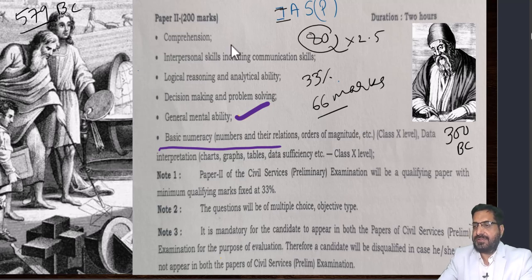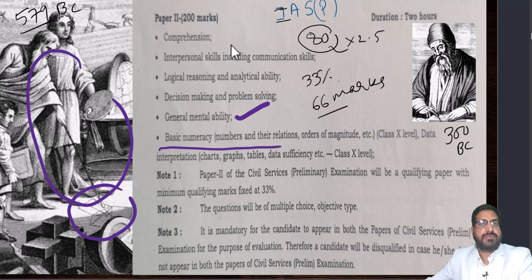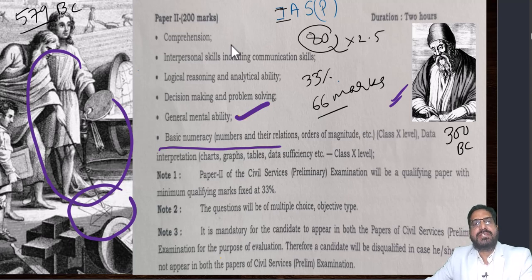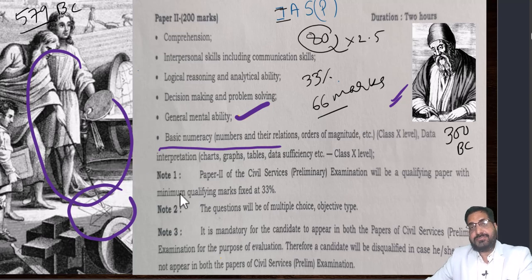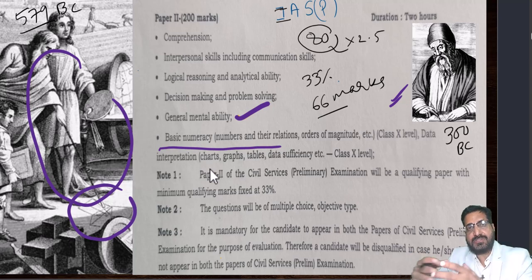This is Pythagoras, showing his famous right triangle. Pythagoras' time — I hope you know — 579 BC. He was born in 579 BC. This is Euclid, 300 BC. He is junior to Pythagoras. Numbers mean so many great mathematicians. They were not just mathematicians; they were philosophers, scientists, all together. They were called polymaths.